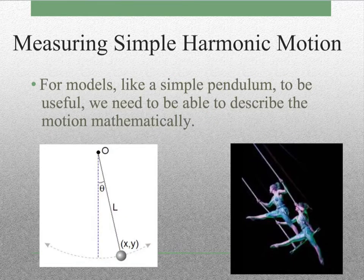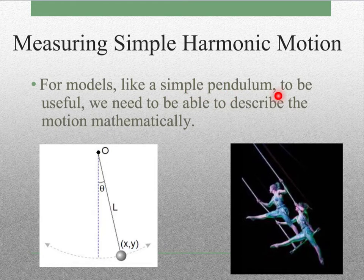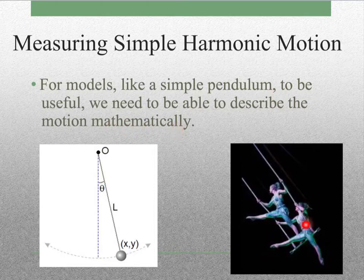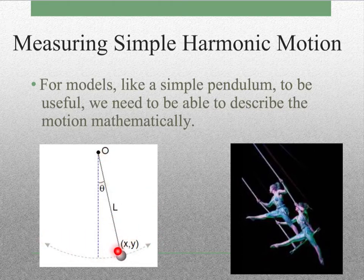For measuring simple harmonic motion, we've talked about two different models — we talked about the simple pendulum. For that to be useful, we need to be able to describe the motion mathematically. So we take our acrobats that we mentioned before, we turn it into a simple pendulum. But now we've got to talk about how we would measure what's going on in our pendulum.